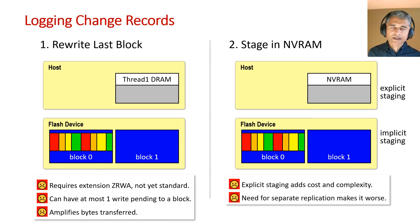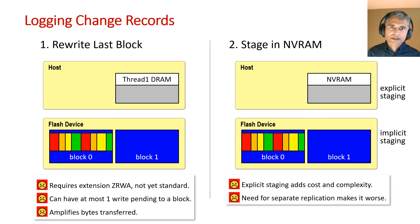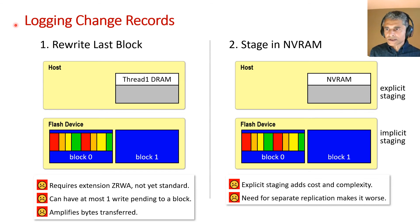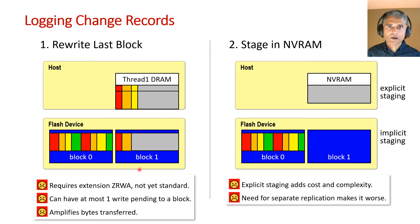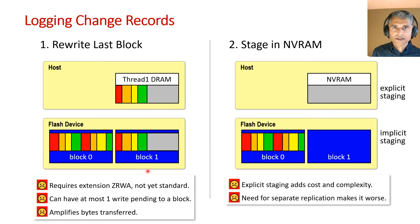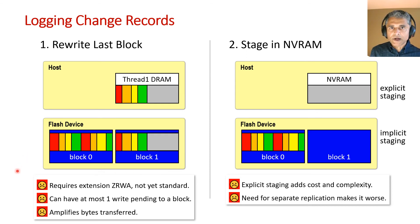The second use case is logging. Zone storage might seem like a natural fit for logging, but one problem is that log records can be much smaller than a block — possibly by a factor of 100 — and each record might still need to be persisted as it arrives. With block storage, the host can use one of two techniques. The first is to rewrite the last block in the log, possibly 100 times. However, zone storage doesn't allow any overwrites, and this requires an extension called ZRWA.